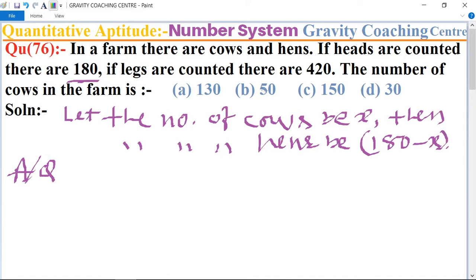If the legs are counted there are 420. Cows have four legs, so we multiply number of cows with 4, so 4 into X, plus number of hens multiply with 2, 2 into 180 minus X, equals the total number of legs, 420.